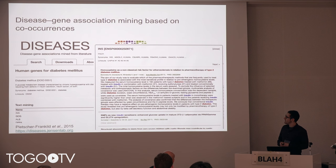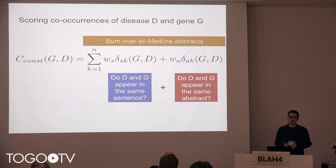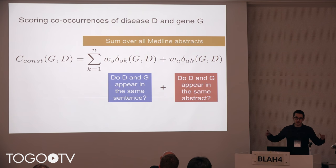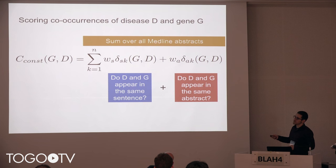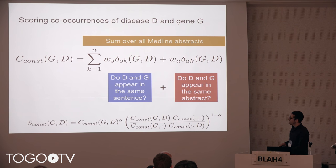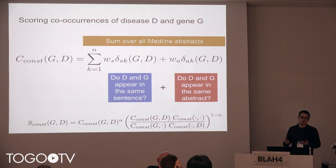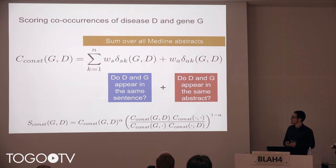There is a score associated with each association, and the way the score is computed is actually very simple. We first compute the co-occurrence count: we sum over all the abstracts, all the documents in the corpus, and count whether a given gene and disease co-occur in the document. If they do, we add W_A, a constant weight. If they even appear in the same sentence, we add an additional weight W_S. So this is just a count for the association between the two. Afterwards, we compute a score which is the raw count weighted to the power of alpha, and then this is the observed-over-expected ratio. We do this so as to not only find genes and diseases that are mentioned frequently, but also look at the statistics behind it.